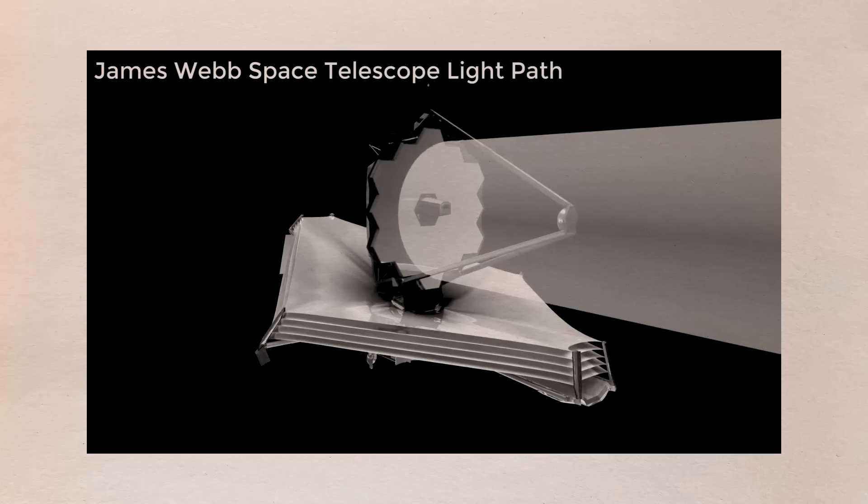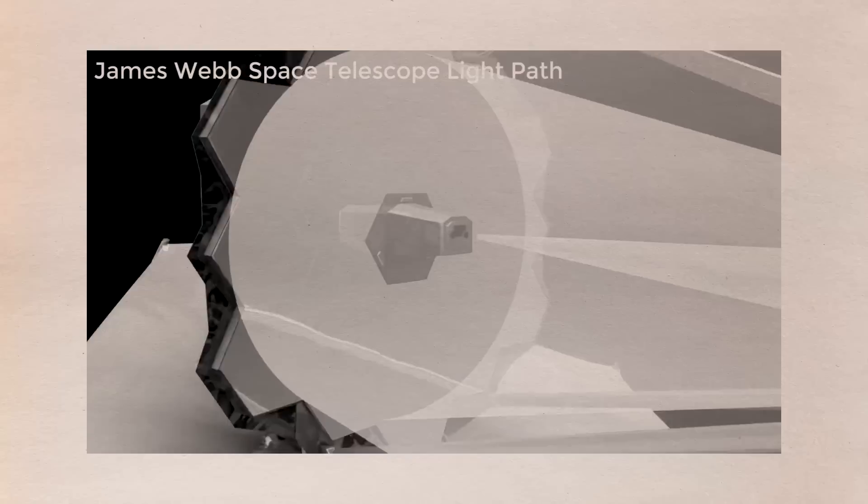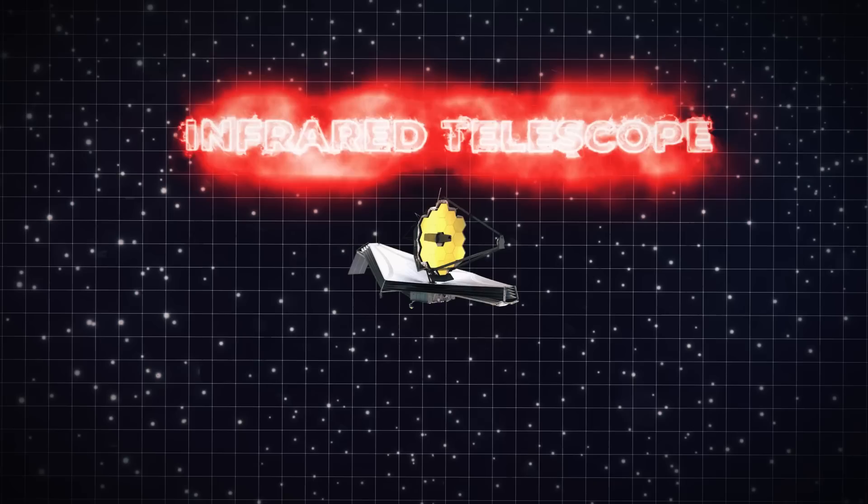It will also be able to observe light from the earliest stars and galaxies close to the Big Bang. The JWST is an infrared telescope, which means that it detects objects in space by means of infrared radiation.